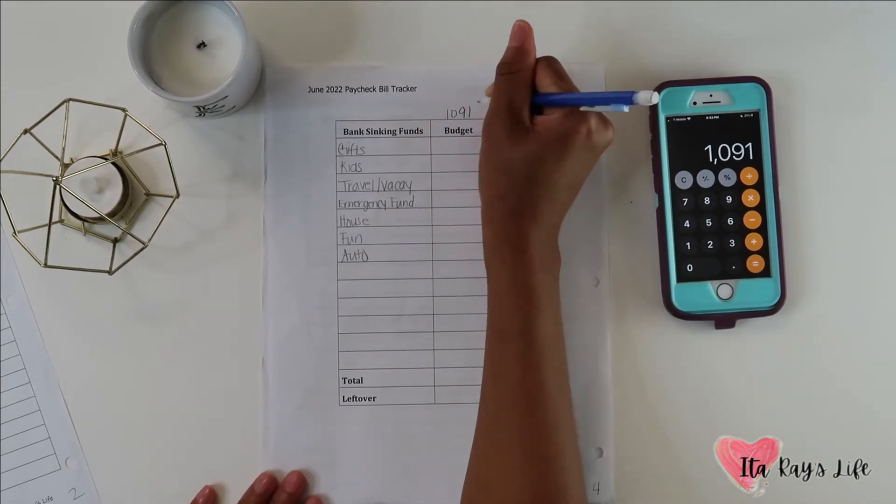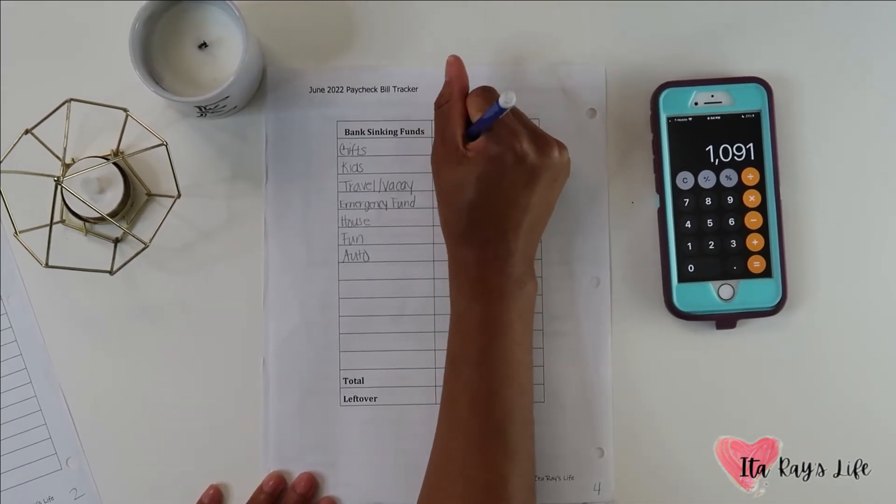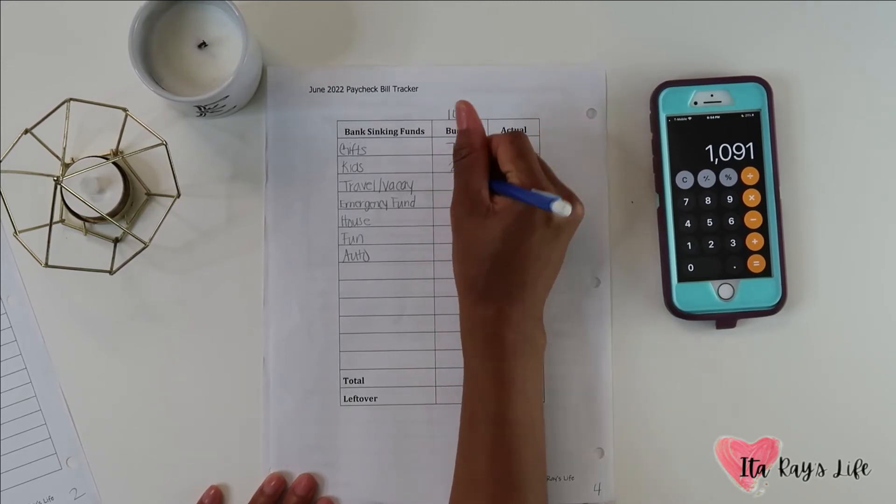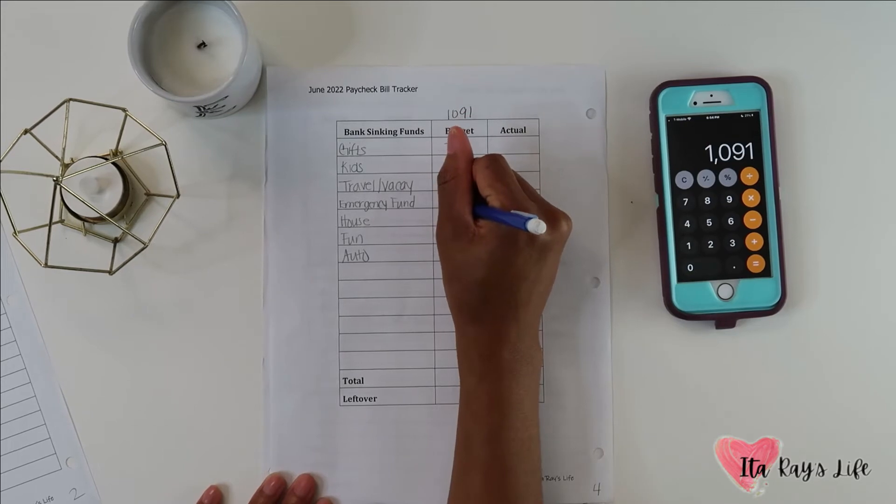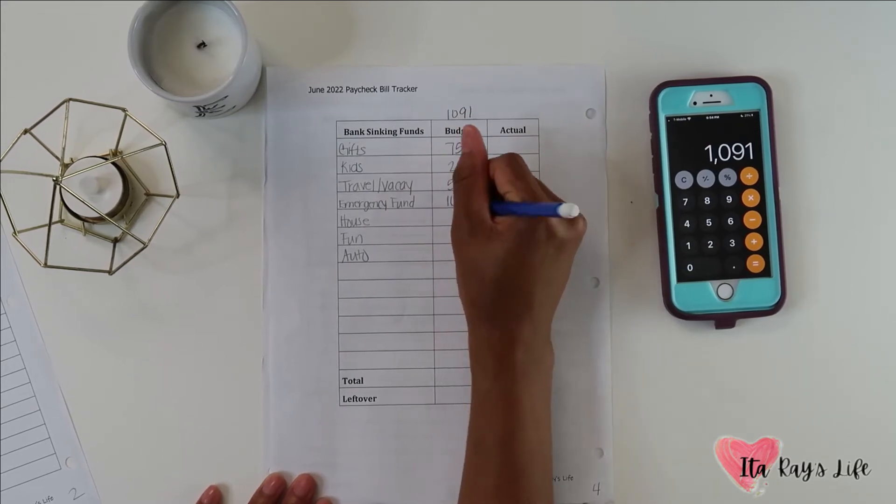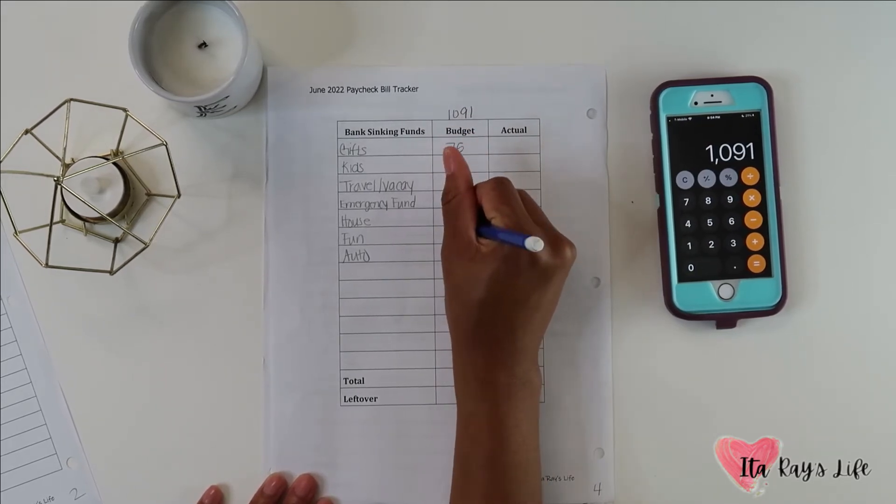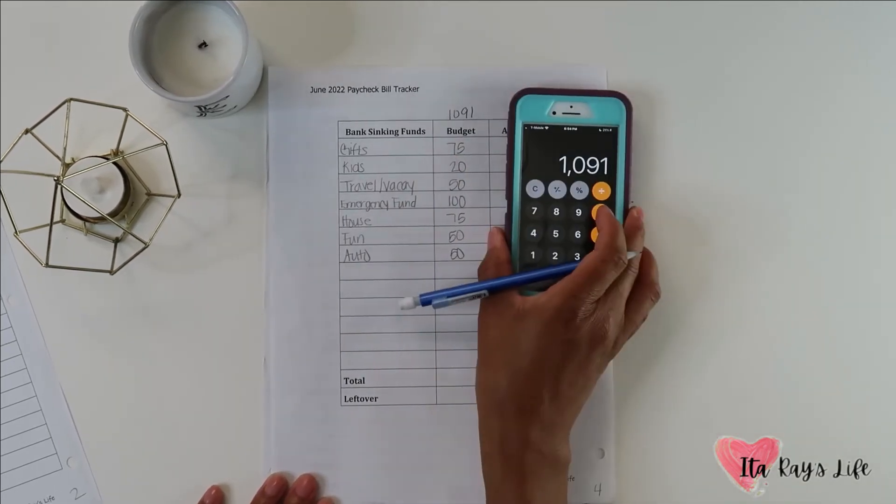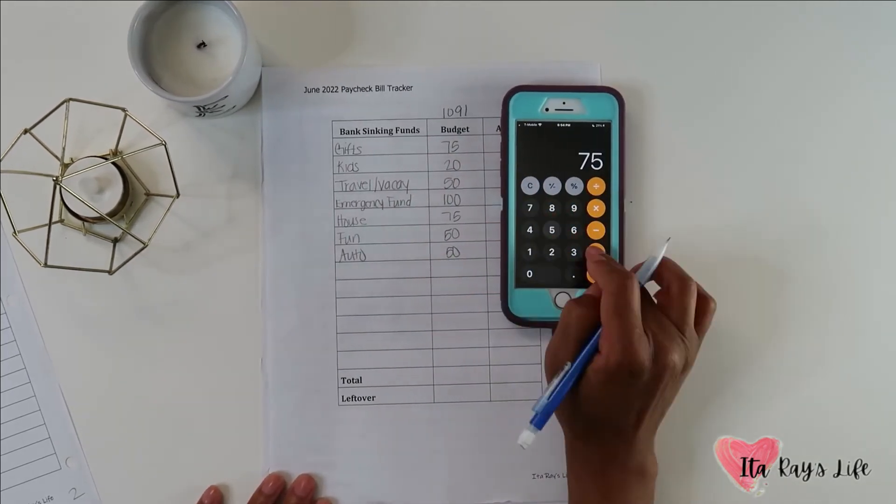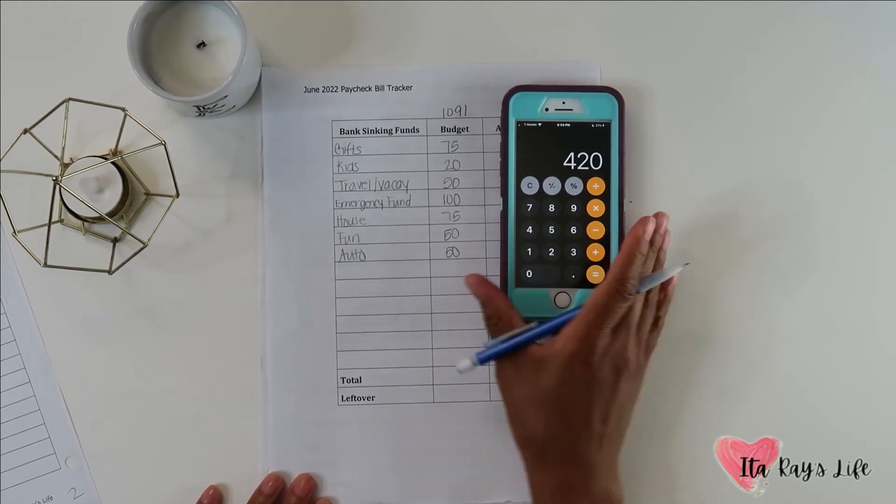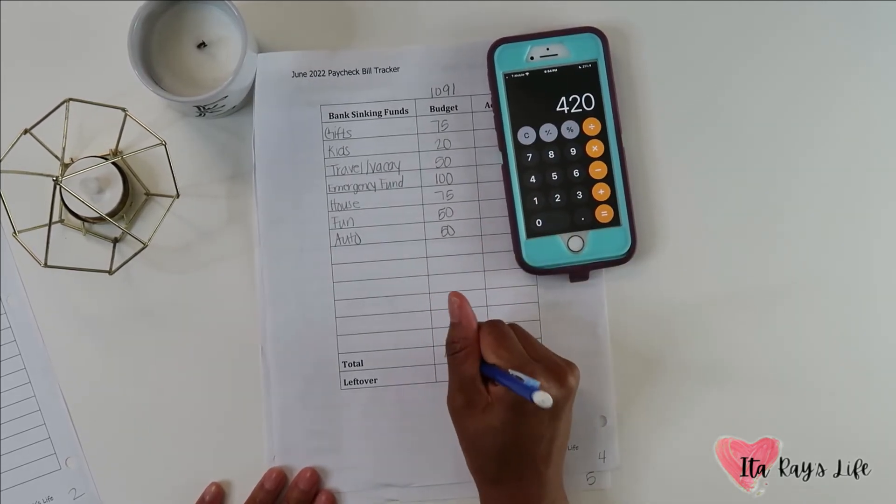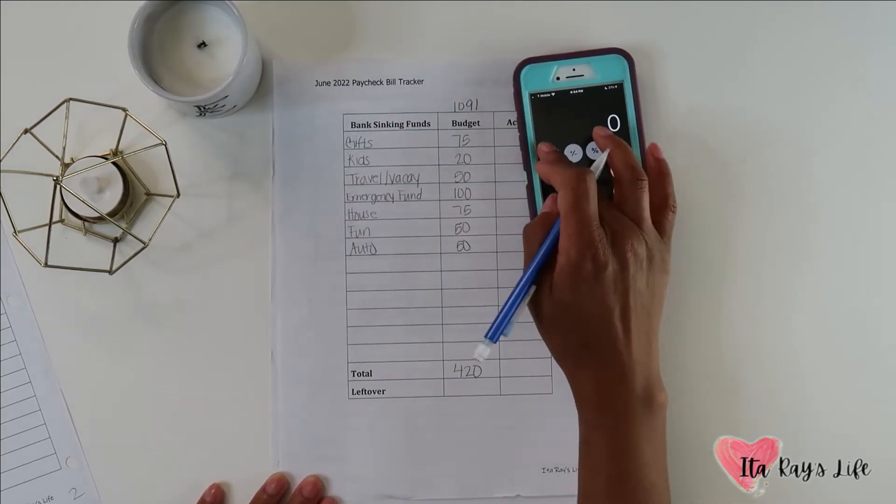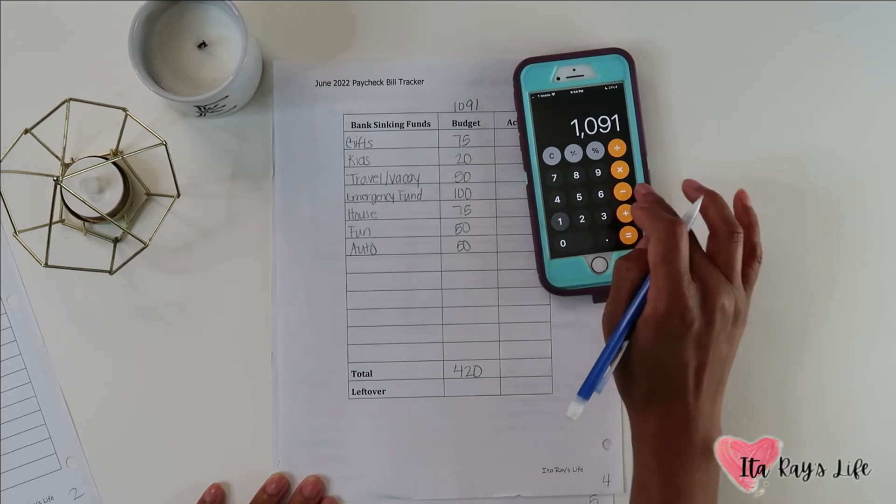Now I am going to take that $1,091 and put it towards my bank sinking funds. For gifts I am going to budget $75, kids $20, travel/vacay $50, emergency fund $100, house $75, fun and auto will get $50 as well. Let's add all of those up together. That gives us a total of $420. I am going to subtract that $420 from that $1,091 and see what we have left over.